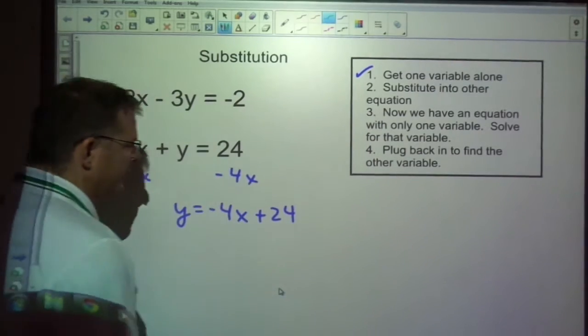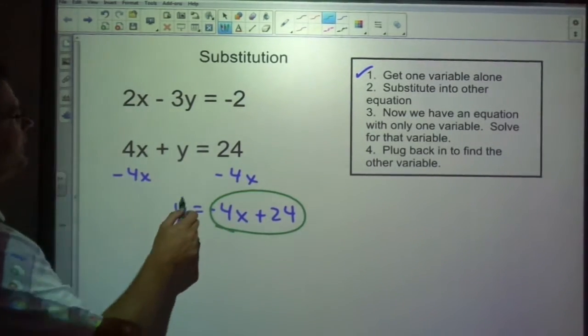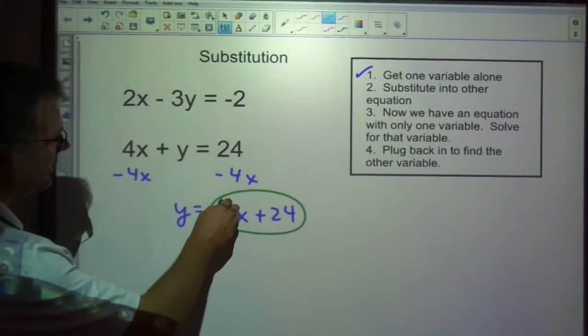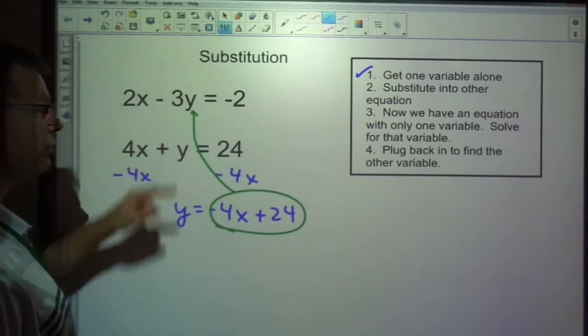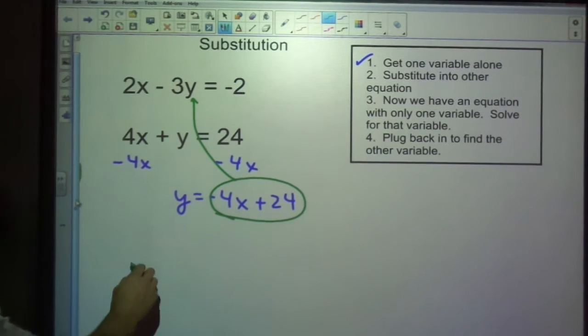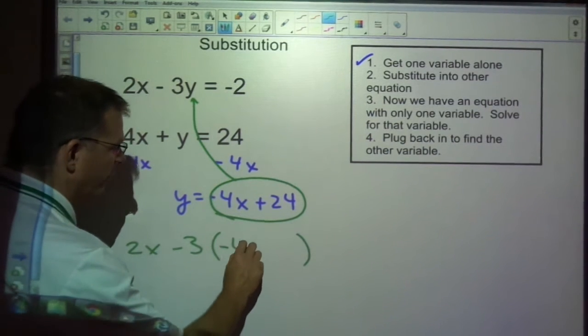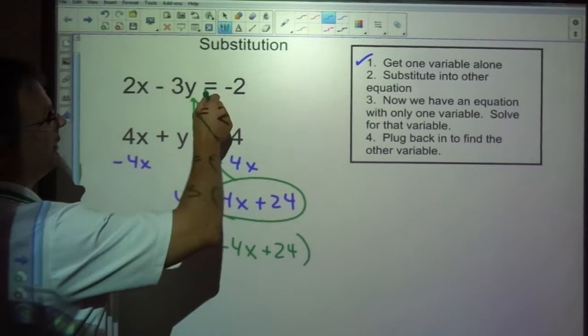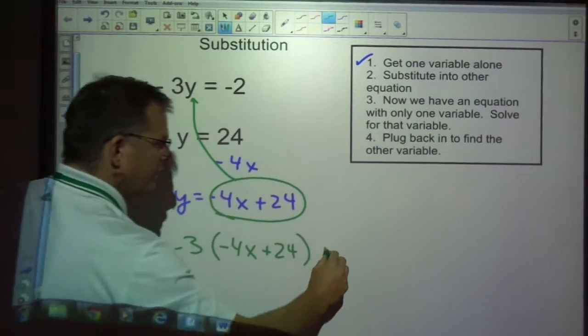Second step, substitute into the other equation. If this is what y is equal to, then in this other equation, since I worked on this one first, in this other equation, instead of y, I can substitute all of this in for y because it's equal to y. So what that would look like is we'd have 2x minus 3, but instead of y, I'm putting in what is equal to y, and that is negative 4x plus 24. And 2x minus 3y equals negative 2.